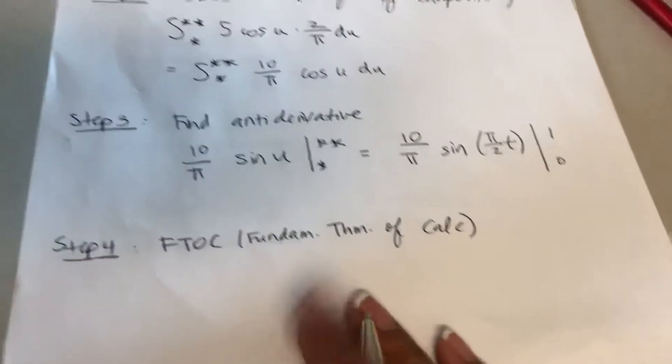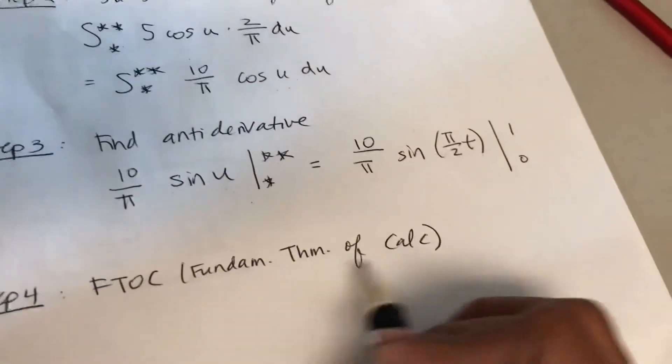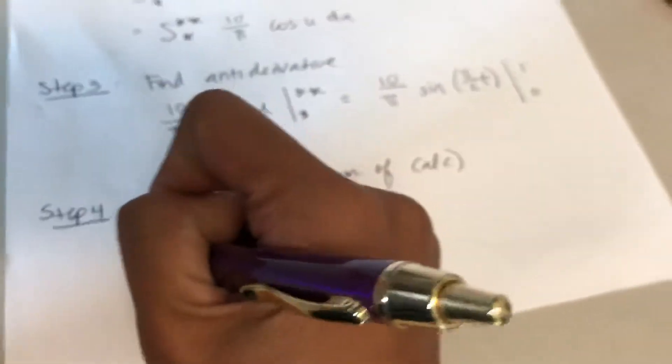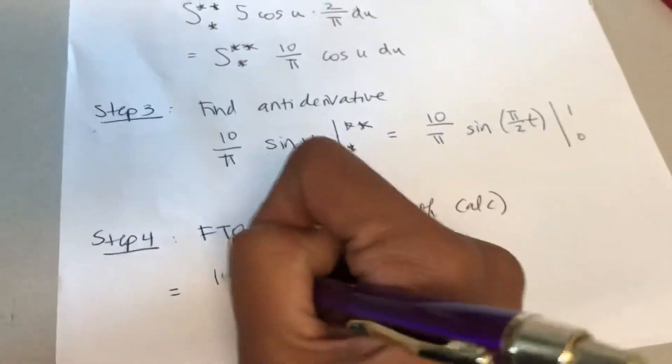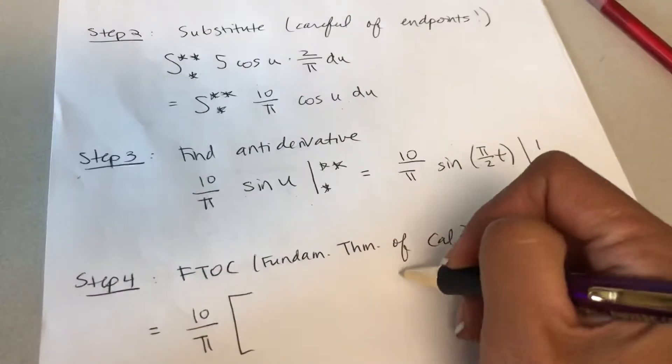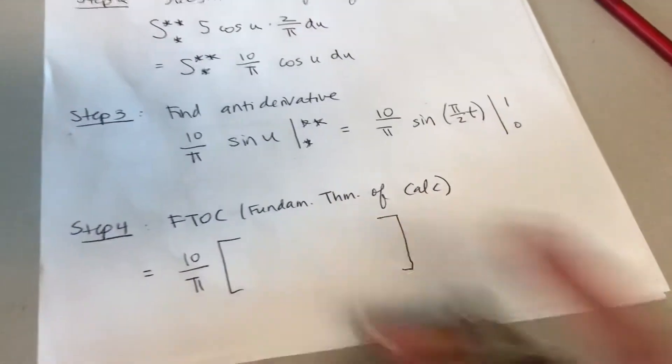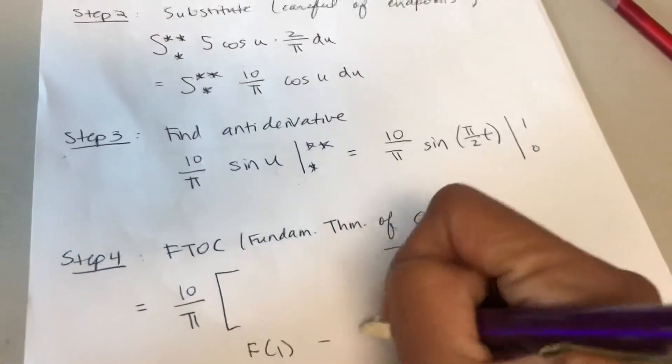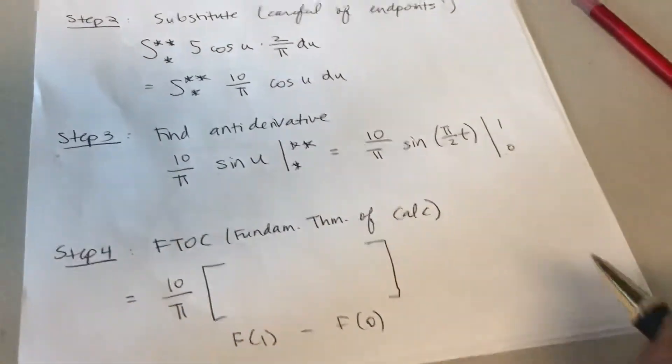The last step is now using the fundamental theorem of calculus to solve this. So f of b minus f of a. Here this is going to become 10 over pi. I'm gonna put this in brackets right now because I'm gonna need f of b minus f of a. So in other words, f of 1 minus f of 0. Fundamental theorem of calculus.